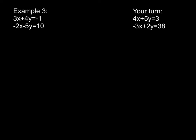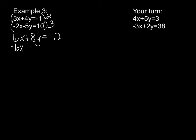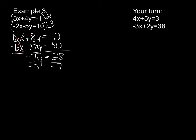Sometimes your equations require you to multiply both equations in order to get the coefficients to be opposites. For the first equation I have two options: eliminate x by making coefficients 6 and negative 6, or eliminate y by making them 20 and negative 20. I prefer smaller numbers, so I multiply the top equation by 2 to get 6x, and multiply the bottom by negative 3. This gives 6x plus 8y equals negative 2 and negative 6x minus 15y equals 30. The x's cancel, leaving negative 7y equals 28. Dividing by negative 7, y equals negative 4.